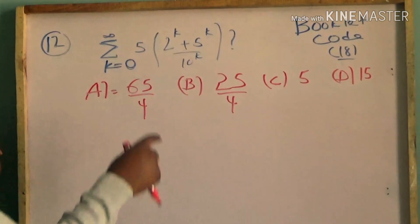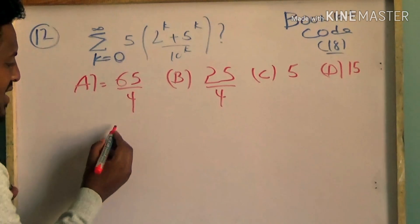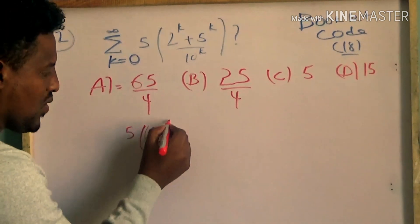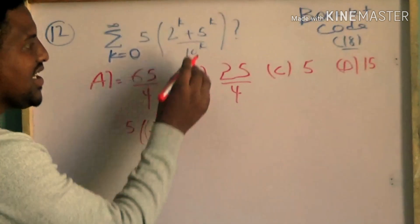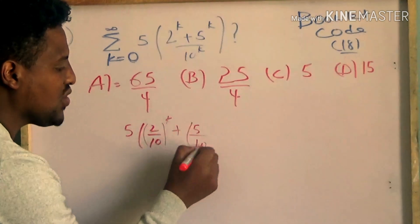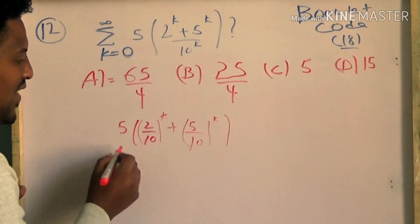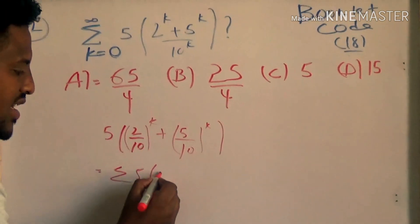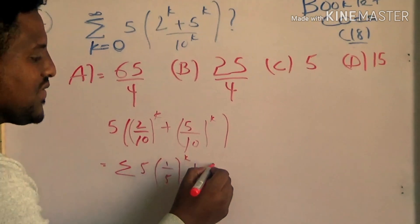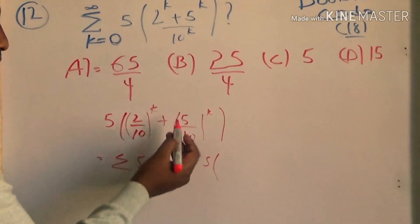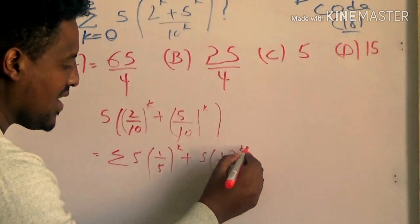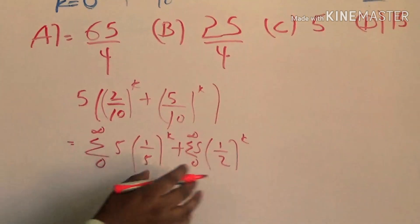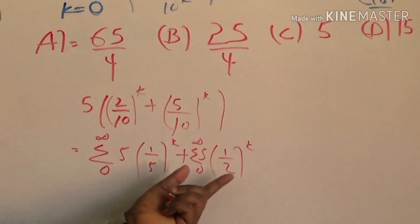We have f2, and we have to work through this. 5 times 2 over 10 — the power of K is equal to the power of K — and 5 over 10. The sum is equal to infinity. So we have 1 over 5 plus 1 over 2, both raised to the power of K — these are geometric progressions.